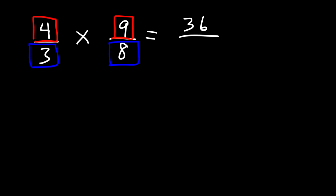Now let's work on another example that's similar to the last one: 4 over 3 times 9 over 8. So pause the video and work on this example. So let's multiply across. What is 4 times 9? 4 times 9 is 36. And what's 3 times 8? 3 times 8 is going to be 24. So how can we reduce 36 over 24?